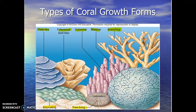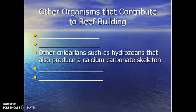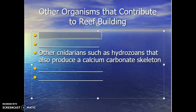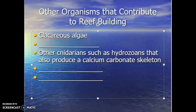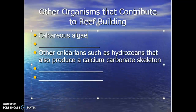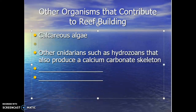Corals are not the only organisms that contribute to reef formation — other things help reefs form as well. Calcareous algae plays a big role in helping the reef grow. The green algae that embed calcium carbonate in their systems, like halimeda, plays a role in coral formation. As that algae dies, it leaves behind the calcium carbonate skeleton.